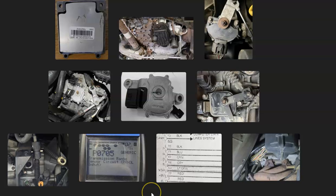That's basically it — just a basic overview of how you go about fixing a vehicle with a P0705 code. If you have anything to add, please comment below. If you have questions, ask and I'll try to answer them. If this video helped you, please click like, subscribe, and have a good day.